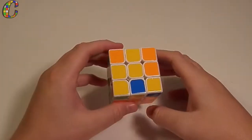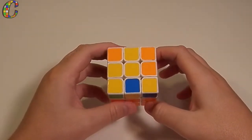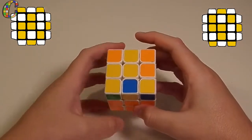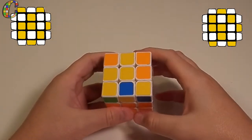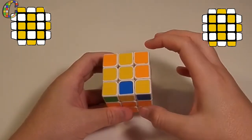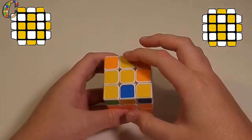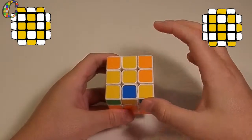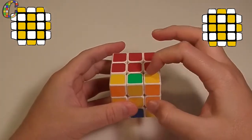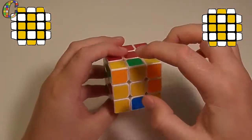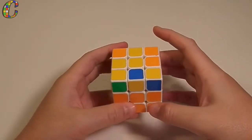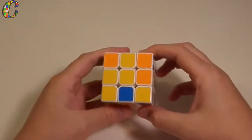Alright guys, so the next couple cases we're going to be covering, OLLs number 41 and 42, are actually really easy to execute, and you'll see why here in a second. But the difficult part comes with recognizing these cases and distinguishing them from the other ones we've learned that have these similar shapes oriented on top. Now, the way I do this is simply by looking for headlights. Both of these next cases have a pair of headlights formed on the top layer that the first two cases don't. So, let's get to it.